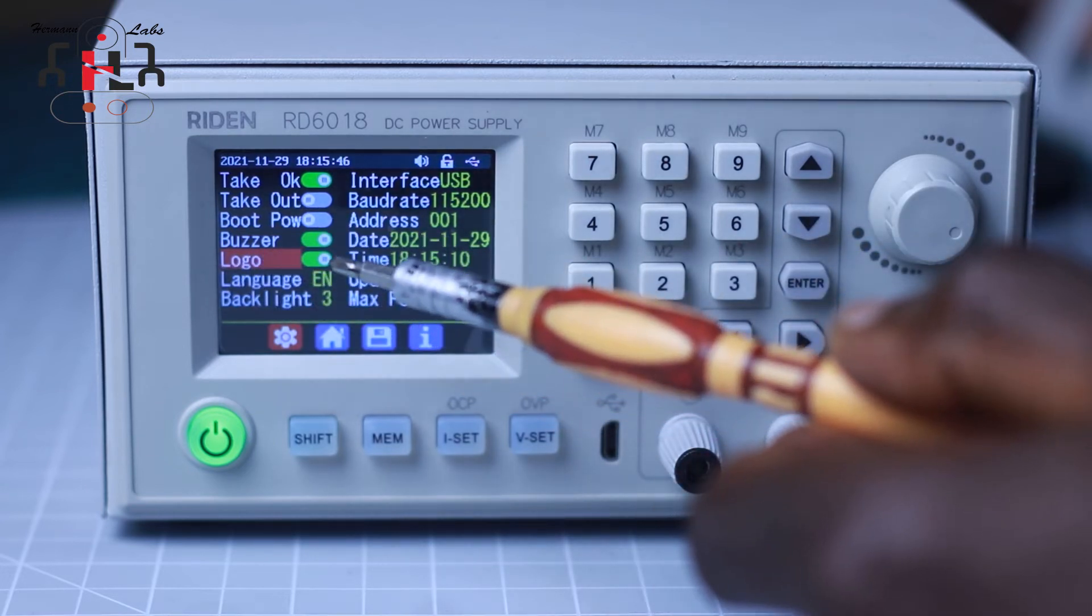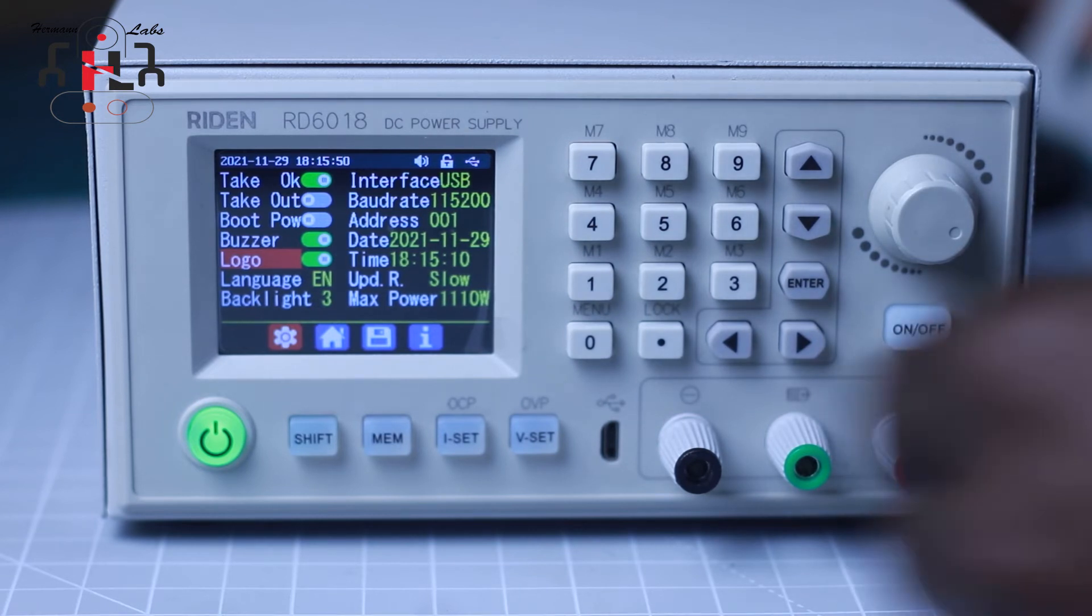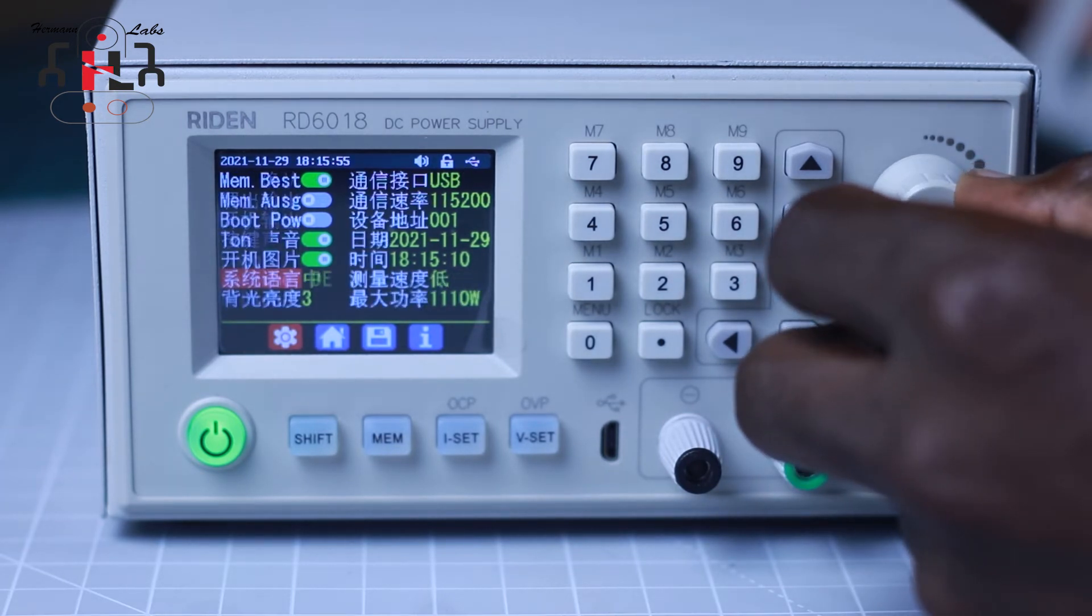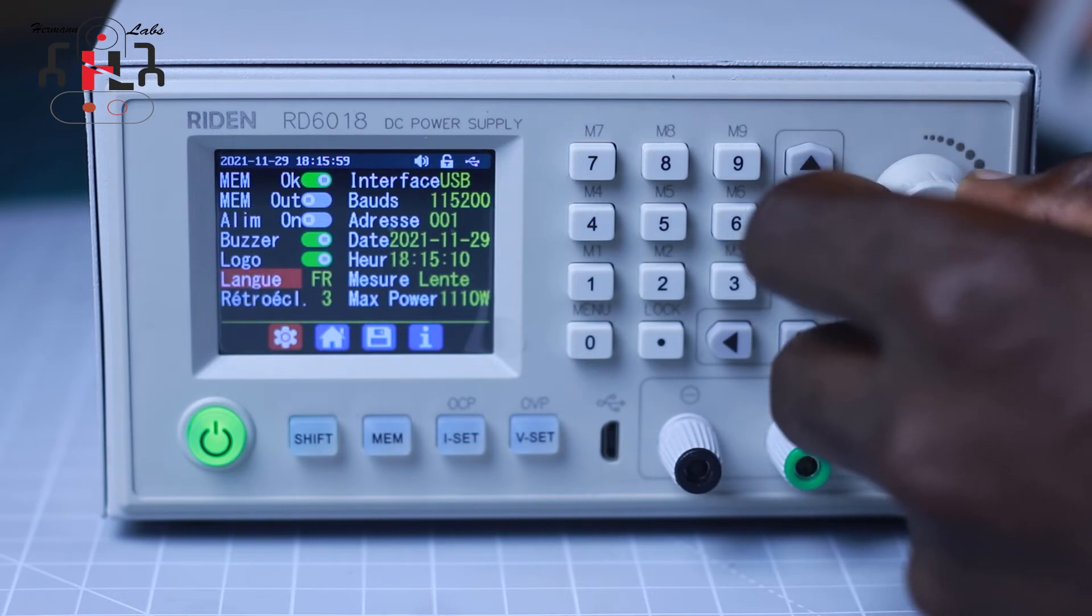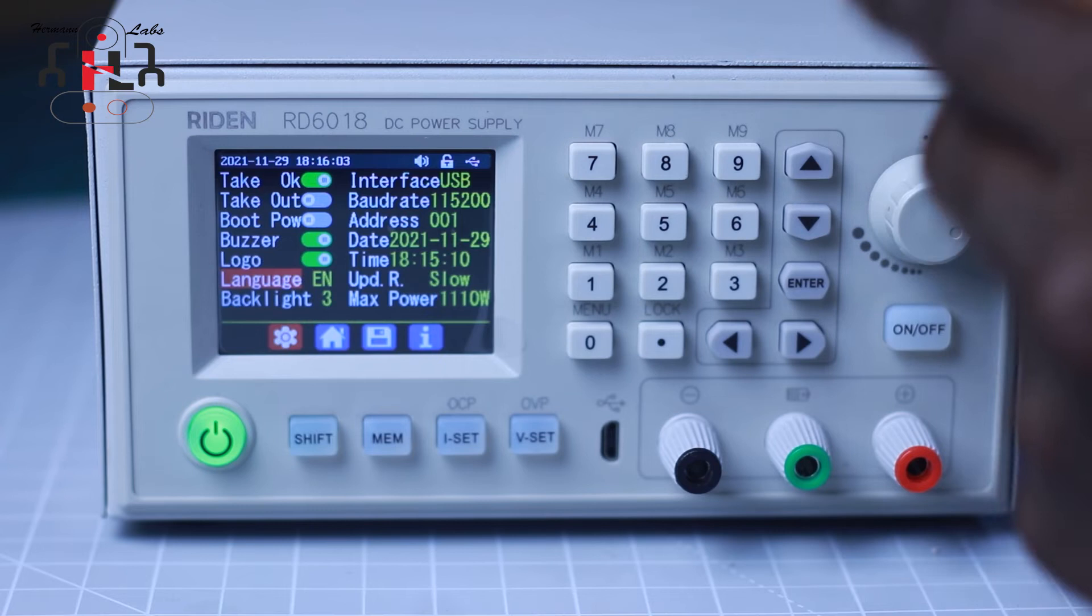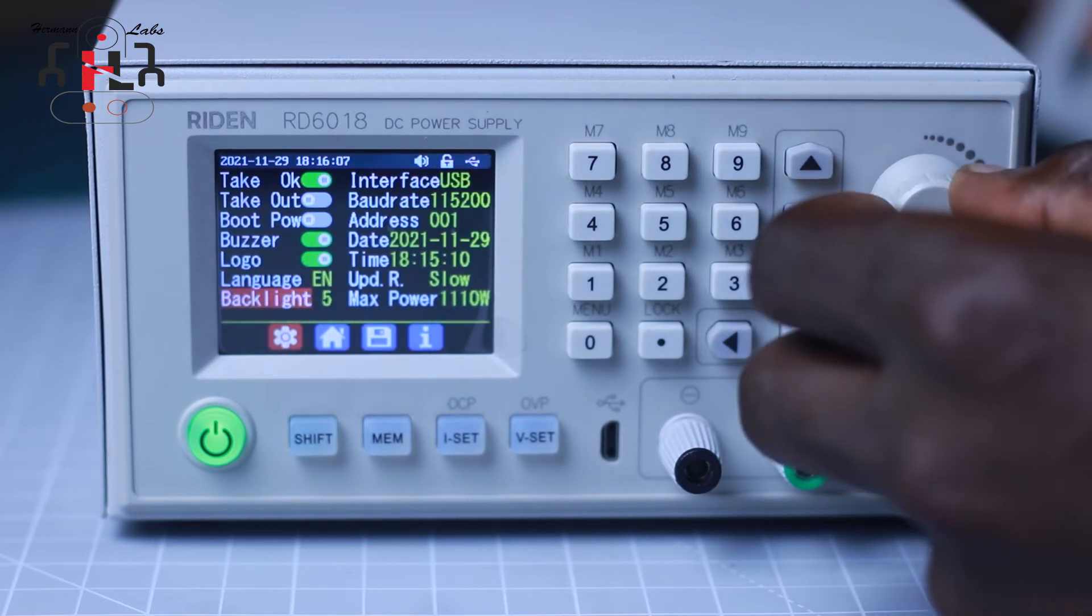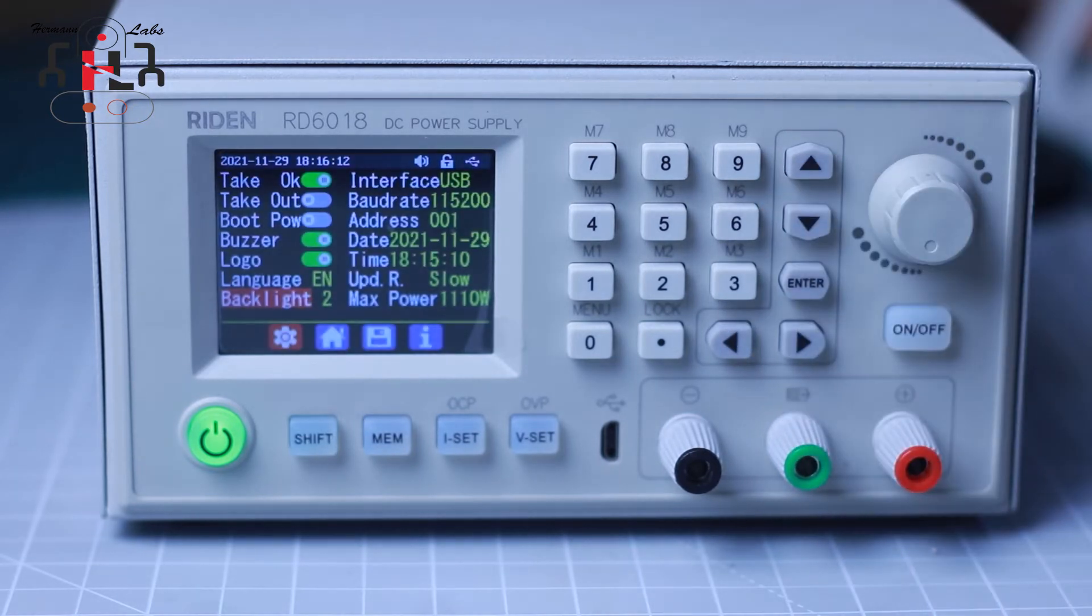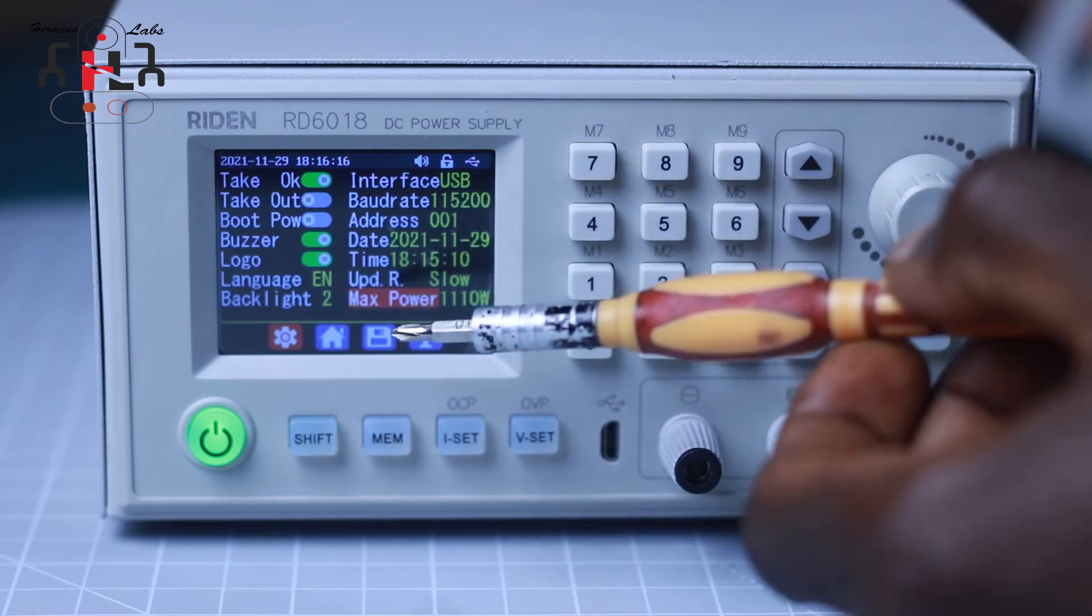I'll go on the logo. To change the logo, we have to use the help of the computer. So we're going to get into that later on in the video. We can change the language. That's Chinese, this is Spanish. We have many languages, so we stick to English. We can change the backlight. See the brightness increase and decreases, so we're going to keep it on 2.